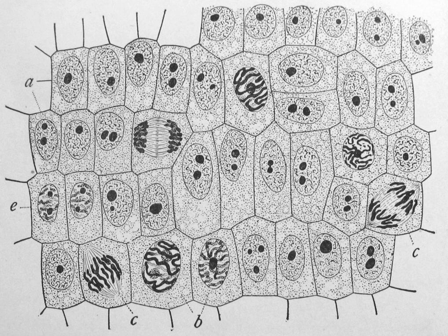Organelles are parts of the cell which are adapted and/or specialized for carrying out one or more vital functions, analogous to the organs of the human body such as the heart, lung, and kidney. Both eukaryotic and prokaryotic cells have organelles, but prokaryotic organelles are generally simpler and are not membrane-bound. Some organelles are typically solitary, while others such as mitochondria, chloroplasts, peroxisomes and lysosomes can be numerous. The cytosol is the gelatinous fluid that fills the cell and surrounds the organelles.